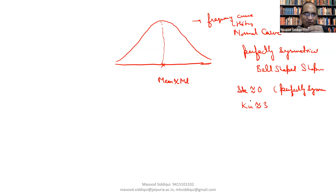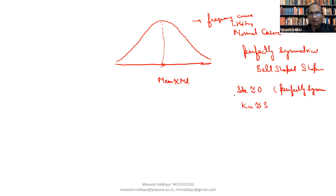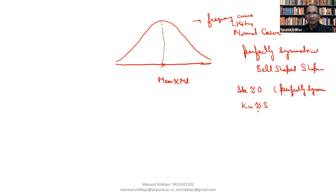If we consider the value of skewness, anything much higher than zero — higher on the positive side or higher on the lower side — will show that our data is not normal. In the same manner, if we consider the value of kurtosis, values higher than three or lower than three will indicate that our data is not normal. This is the primary concept of normality of the data.